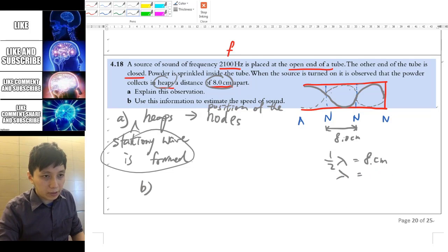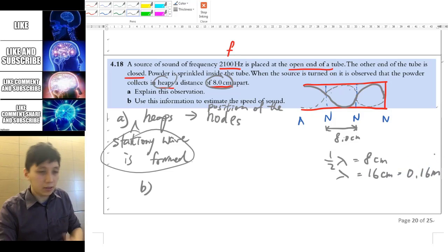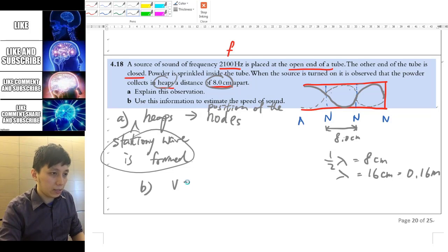Therefore, one lambda is going to be 16 cm which equals 0.16 m, turning it into SI unit. And lastly,